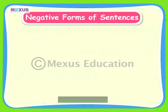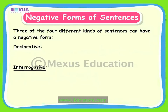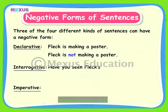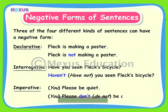We have learnt about the four different kinds of sentences, but only three of these can have negative forms — that is, the declarative, interrogative and imperative sentences. The declarative sentence Fleck is making a poster can have a negative form: Fleck is not making a poster. The interrogative sentence Have you seen Fleck's bicycle? can be written in the negative as: Haven't you seen Fleck's bicycle? Similarly, the negative form of the imperative sentence Please be quiet is: Please don't be quiet.